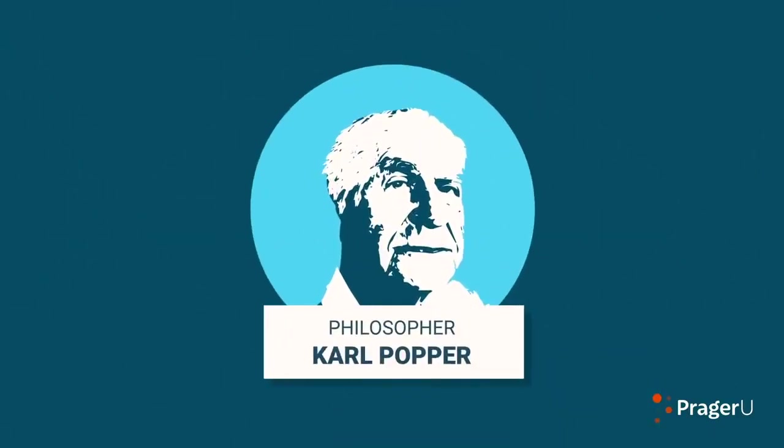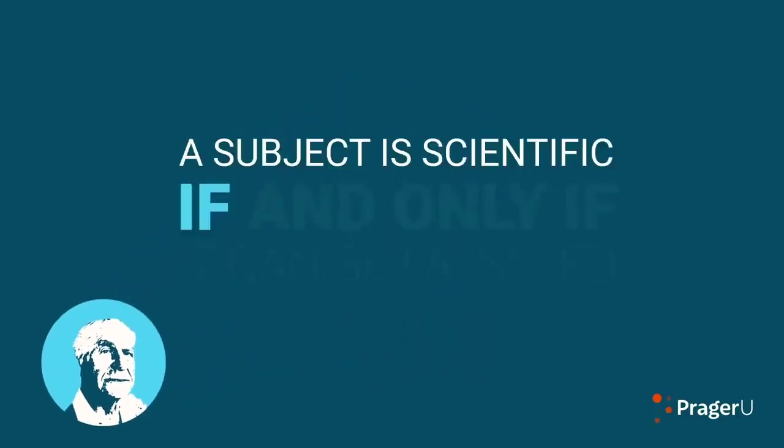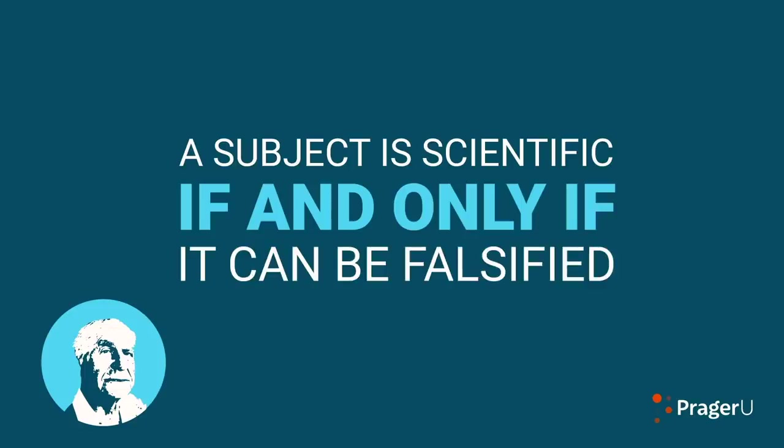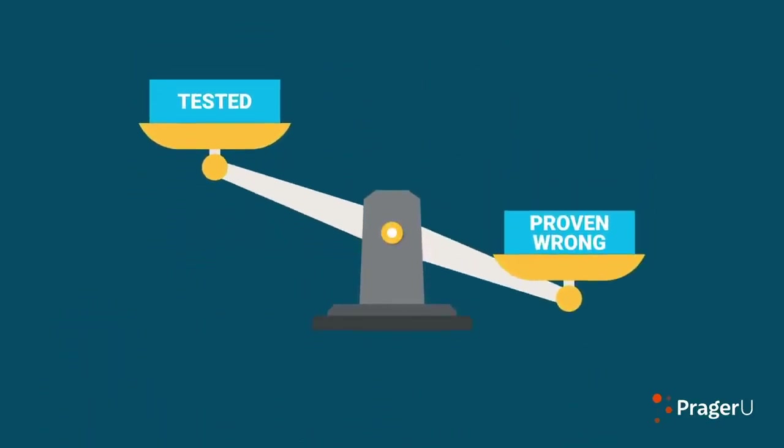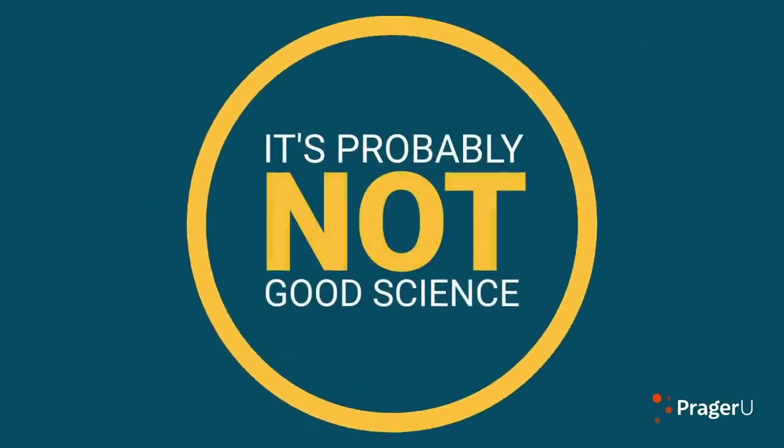The philosopher Karl Popper added one more item to this list. Popper said a subject is scientific if and only if it can be falsified. In other words, if your theory can't be tested, if it can't be proven wrong, it's probably not good science.